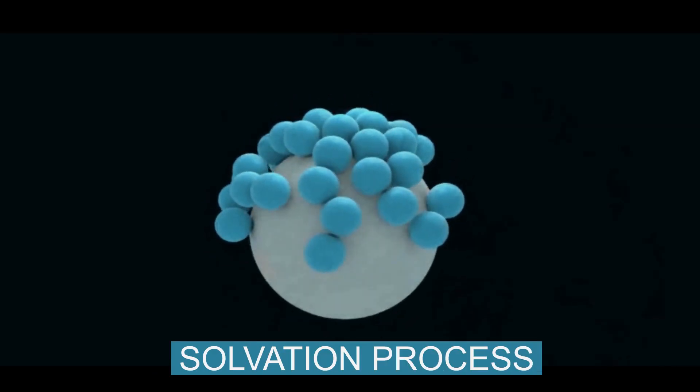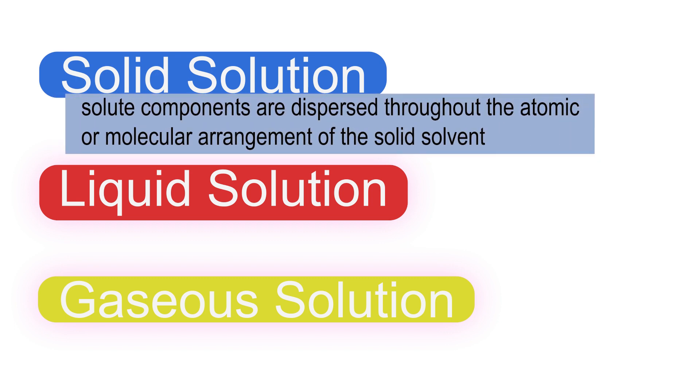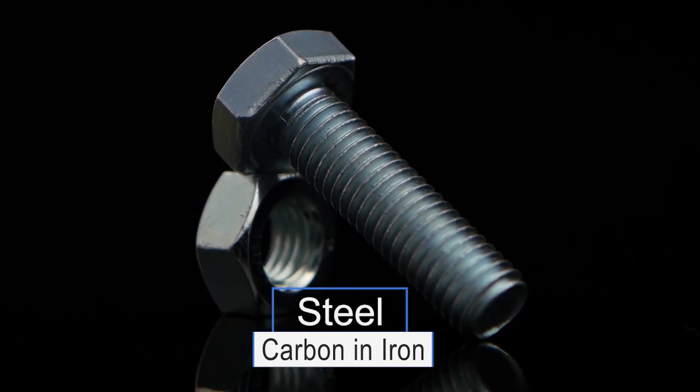A solution can be in any state of matter: solid, liquid, or gas. A solid solution has its solid component dispersed throughout the atomic or molecular arrangement of the solid solvent. For example, steel is a solution of carbon and iron.